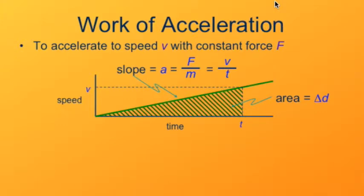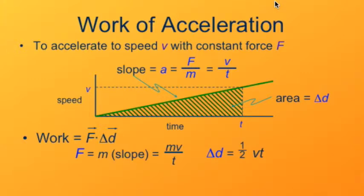Now we'll figure out what the work is. The work, recall, is the dot product of the force and the displacement. The force is mass times the acceleration by Newton's second law. The slope is v over t. So the force we can say is mv over t.